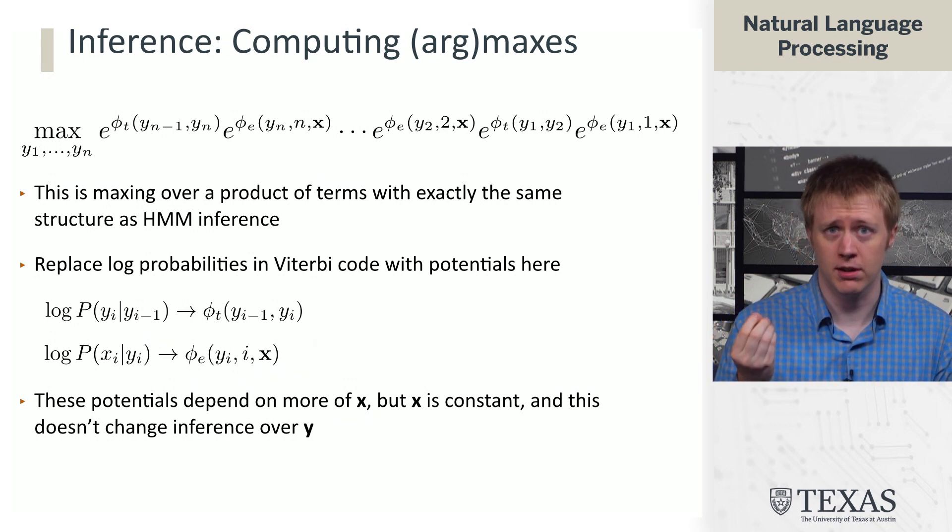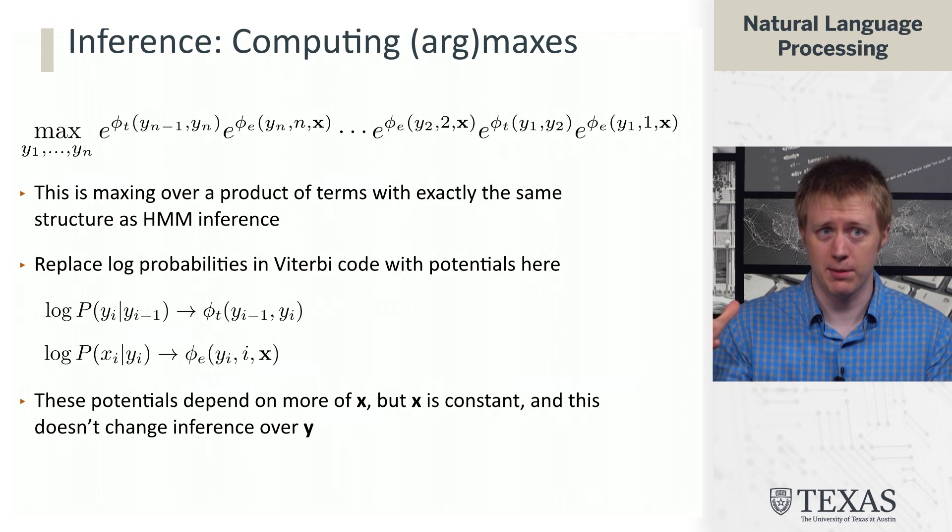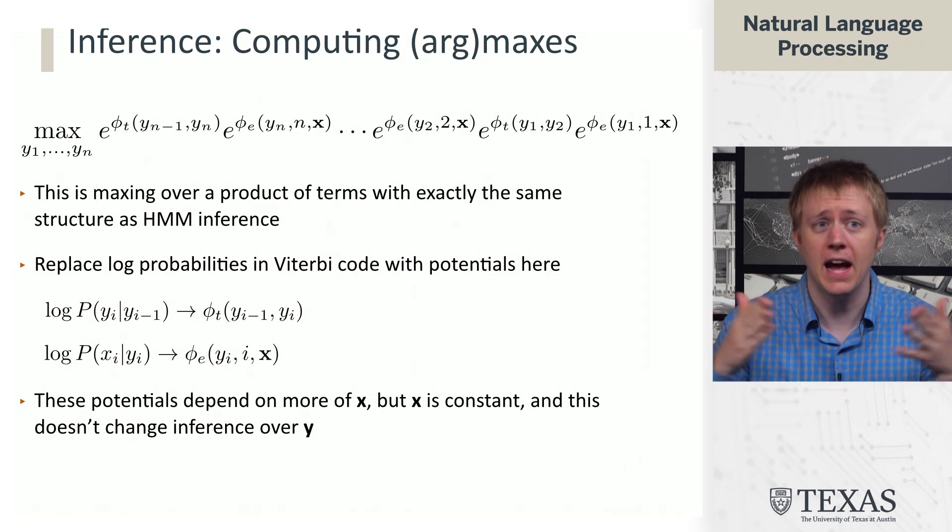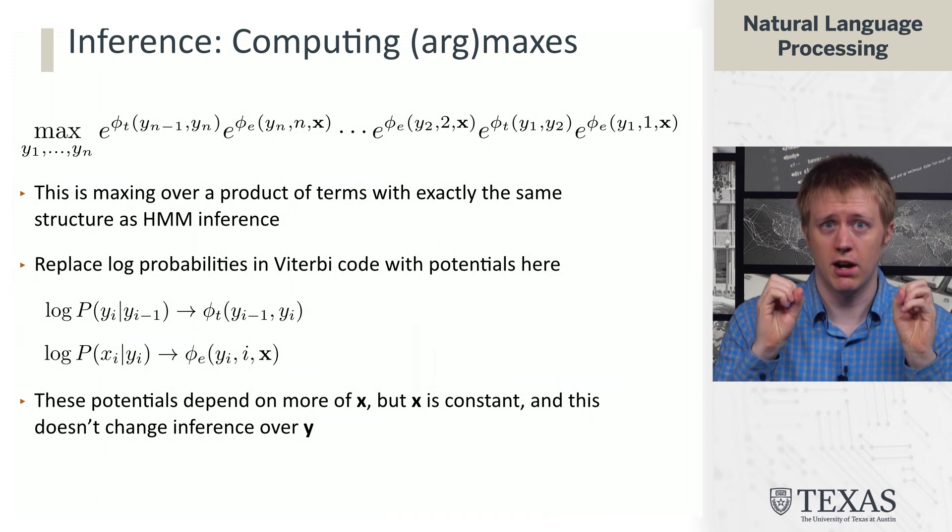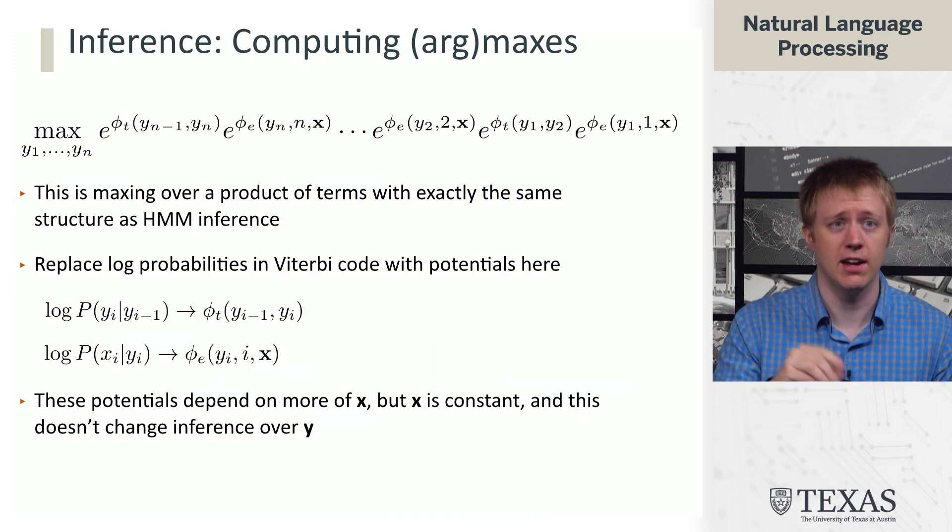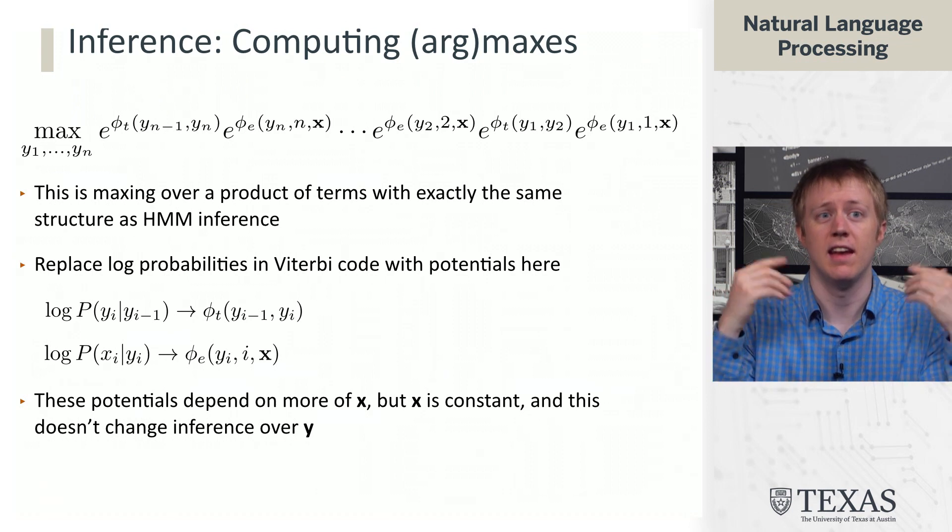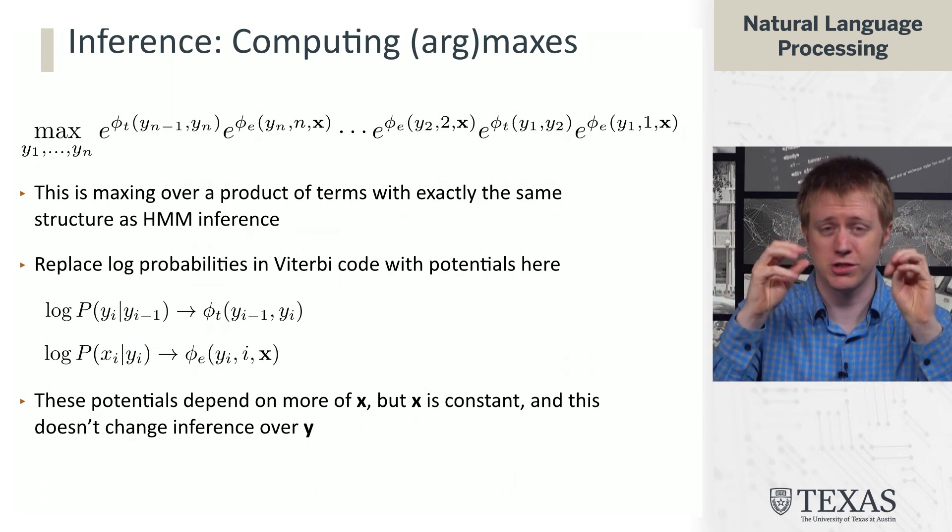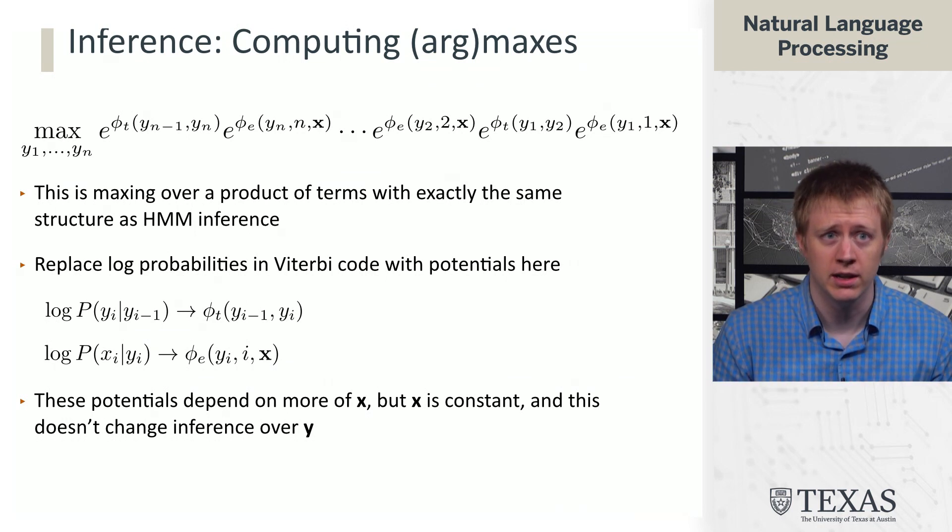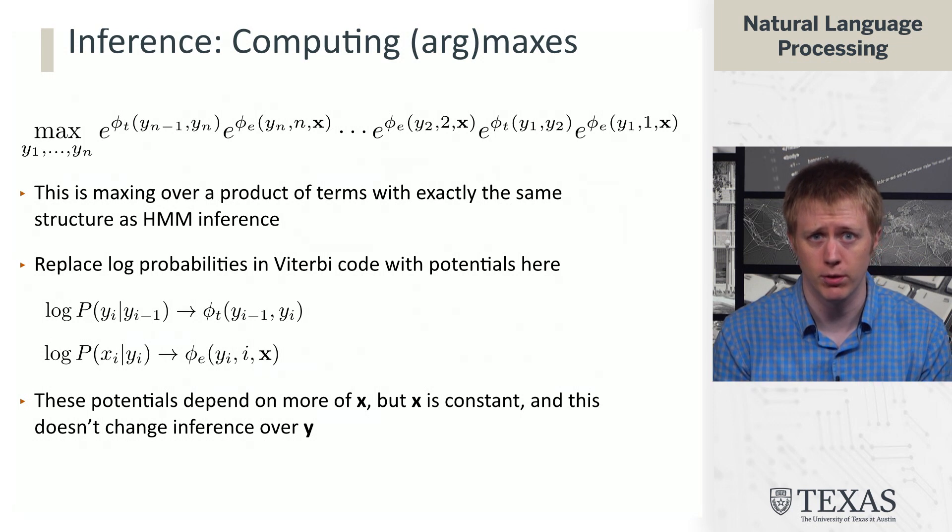The potentials now depend on more of X. That's the main difference here in that the emissions, for example, can look at the whole sequence. But X is constant from the perspective of this tagging algorithm. We are conditioning on it and saying, we're given this sentence, now we're going to model which tags are most likely over it. And so that doesn't change anything about what we're doing for inference over Y.